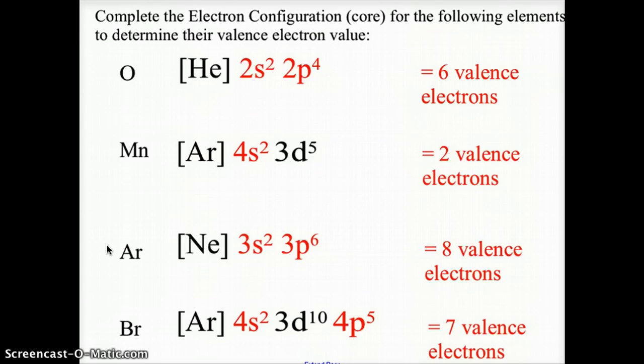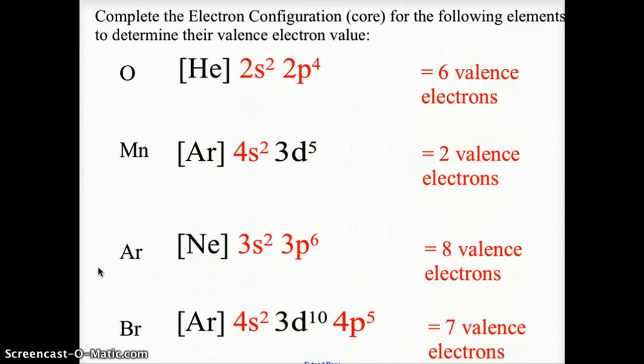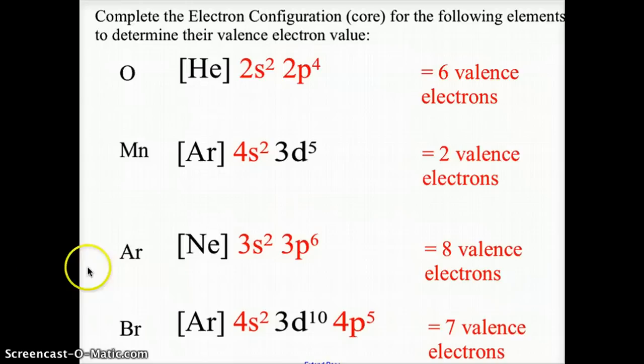And for bromine, we have argon, 4s2, 3d10, 4p5. The s2 and the p5 gives us seven valence electrons.